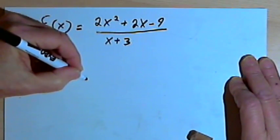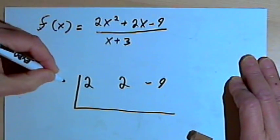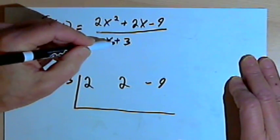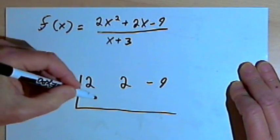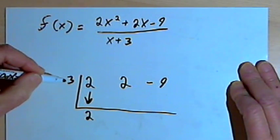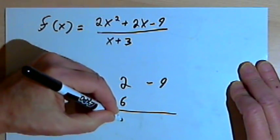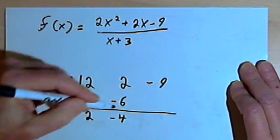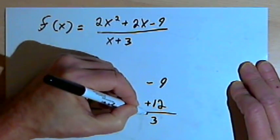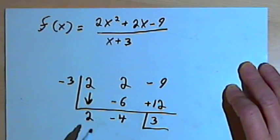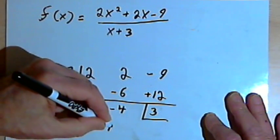I'll set up the synthetic division problem. I'm going to take the coefficients in the numerator — that's 2, 2, and negative 9 — and divide by negative 3, since the denominator was x plus 3 and I change the sign of the constant. I bring down that 2, multiply negative 3 times 2 to get negative 6, then add: 2 plus negative 6 is negative 4. Then negative 3 times negative 4 gives positive 12, and negative 9 plus 12 gives 3 — that's the remainder. I turn the non-remainder results back into a polynomial: 2x minus 4.